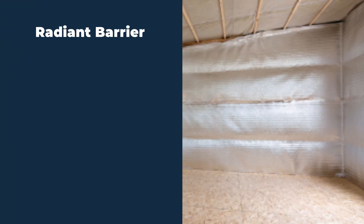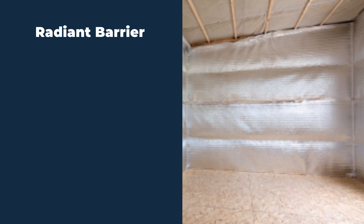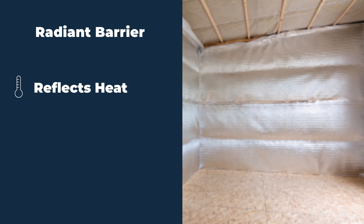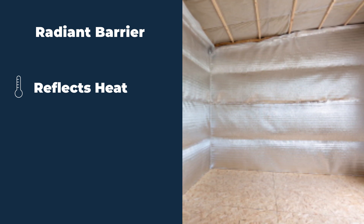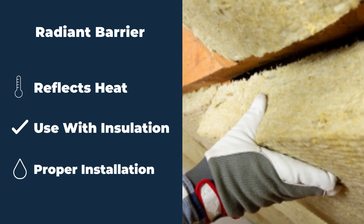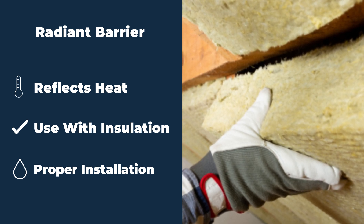The final type of wall insulation I'd like to touch on is a radiant barrier. It's not your primary insulation — it deals with reflecting radiant heat waves either into the structure or reflecting them on the outside of the structure to keep heat from coming in. It's almost always used in conjunction with a typical or standard insulation. I cannot stress enough that how you install it is critical. It's definitely a moisture barrier, so making sure you're installing it on the correct side of the wall cavity and not trapping moisture is essential.